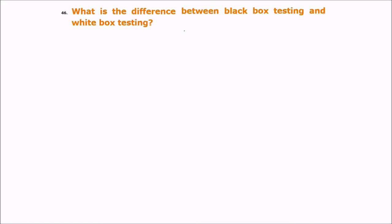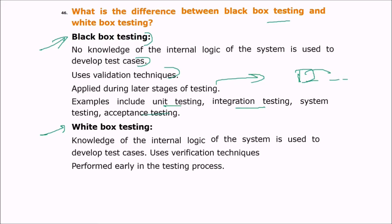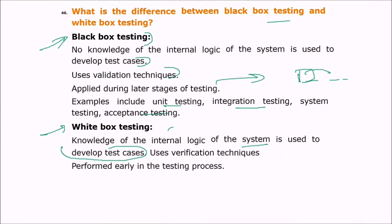What is the difference between black box testing and white box testing? In black box testing, no knowledge of the internal logic of the system is used to develop test cases; it uses validation techniques and is applied later in the development stages. It includes unit testing, integration testing, system testing, and acceptance testing. In white box testing, knowledge of the internal logic is used to develop test cases, and it is performed early in the testing process.